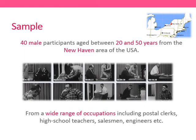For the sample details: there were 40 male participants, all aged between 20 and 50 years, all from the New Haven area of America, and from a wide range of occupations — postal clerks, high school teachers, salesmen, engineers, and many others. The only group excluded was students. Milgram excluded students altogether because he believed there was something fundamentally different about them when it comes to obedience — they may be more likely to obey because they're so used to being subordinates to authority, having teachers and lecturers telling them what to do.